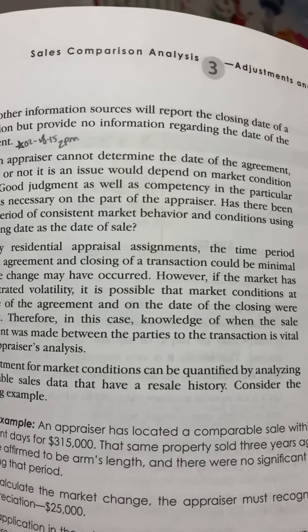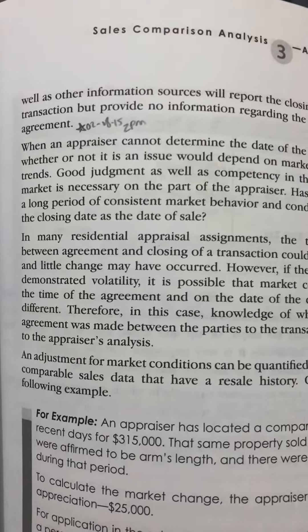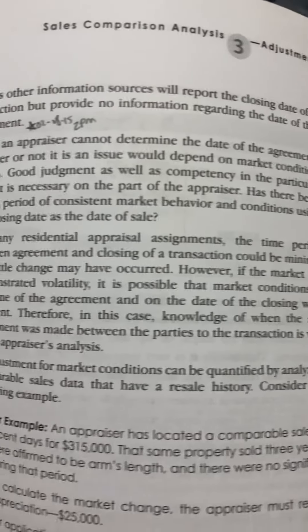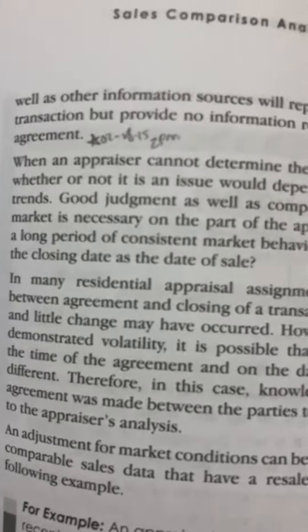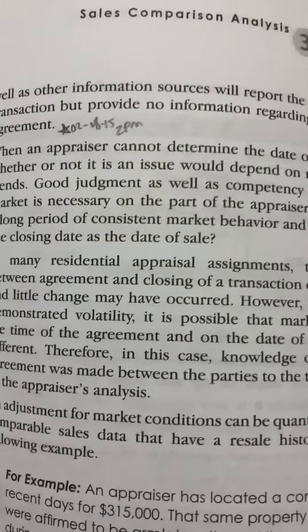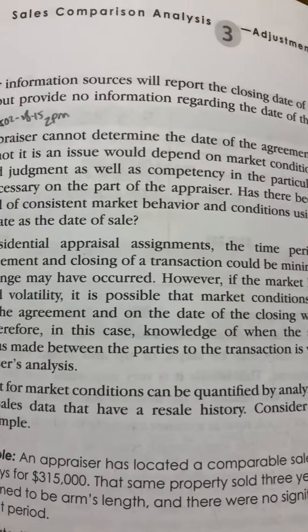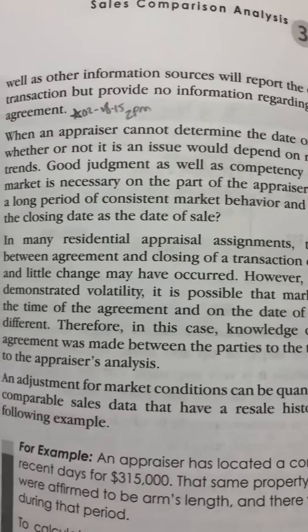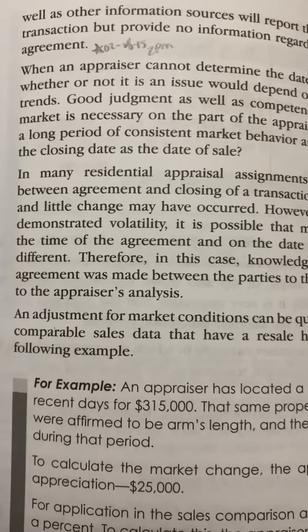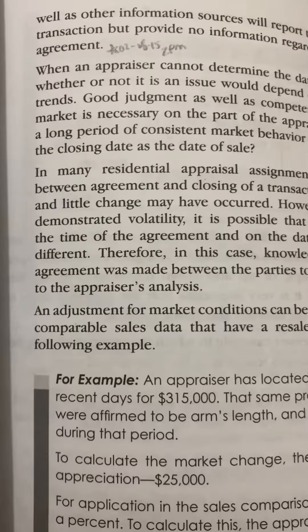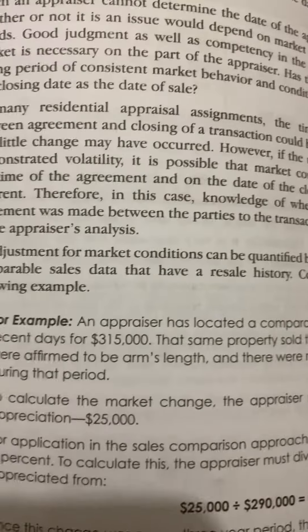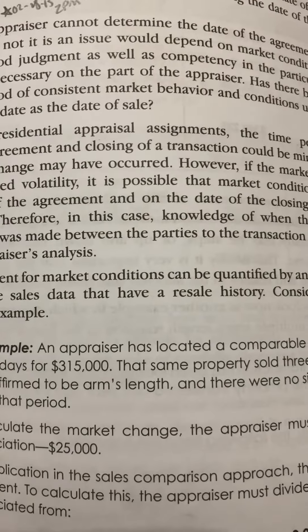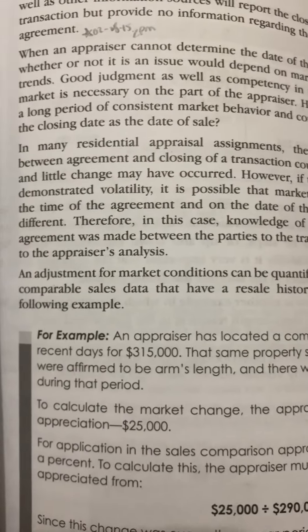Other information sources will report the closing date of a transaction but provide no information regarding the date of the agreement. When an appraiser cannot determine the date of the agreement, whether or not it is an issue depends on market condition trends. Good judgment as well as competency in the particular market is necessary on the part of the appraiser. In many residential appraisal assignments, the time period between agreement and closing of a transaction could be minimal and little change may have occurred.